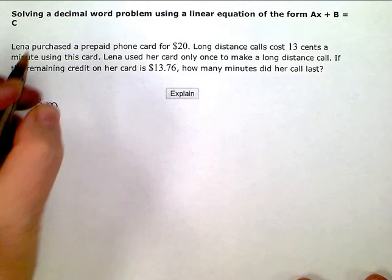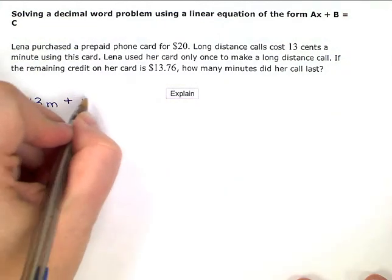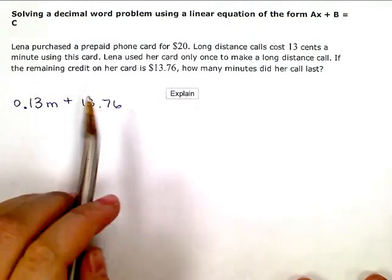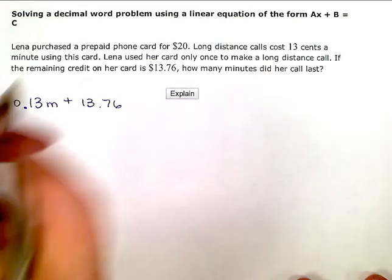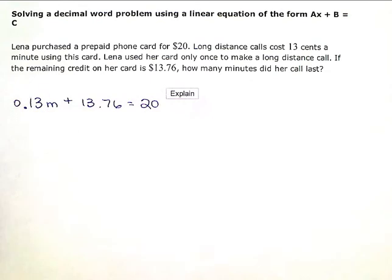And then I know that she still has $13.76. So the money she has left plus the minutes she used have to be equal to the $20 she started with.